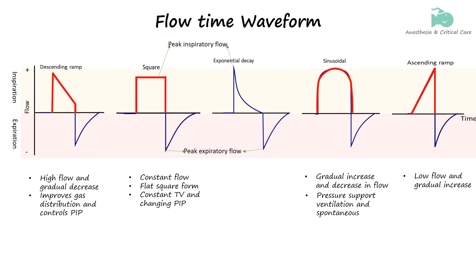The exponential decay flow pattern seen in pressure-controlled ventilation starts with a high flow rate that gradually decreases as the lungs fill. This pattern shown as a downward sloping curve on the waveform helps distribute air more evenly and reduces peak airway pressures making it gentler on the lungs.